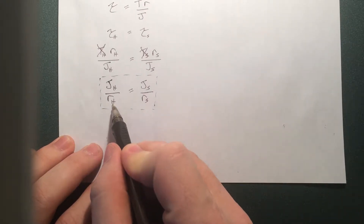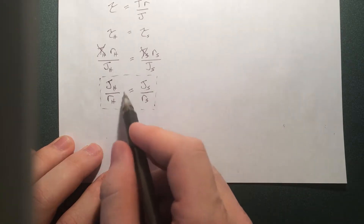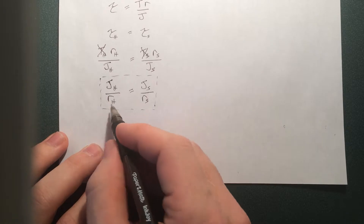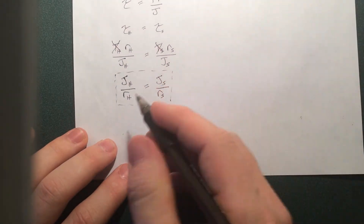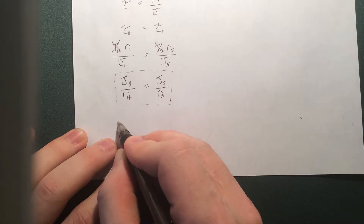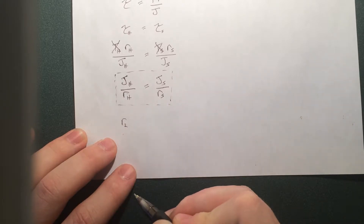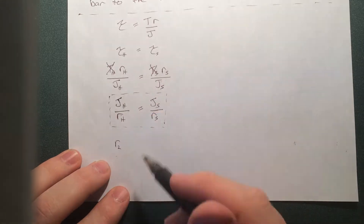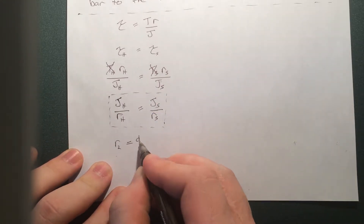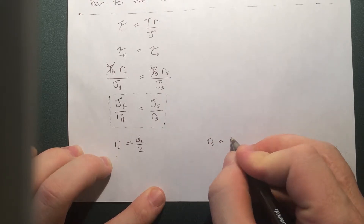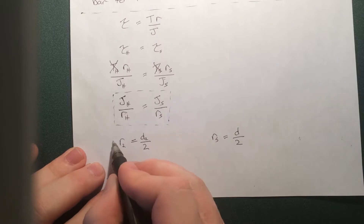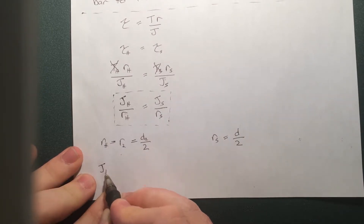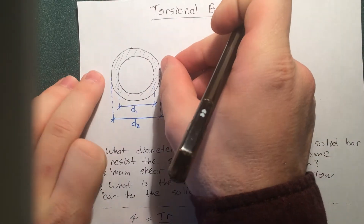We need the radii in terms of their maximum values. The radius for the hollow one — its maximum value is at D2, so R_H equals D2/2. That maximizes the shear stress expression. The radius for the solid is the solid bar diameter D divided by 2. Now for the polar moment of inertia of the hollow one, it's the moment of the outer minus the inner.